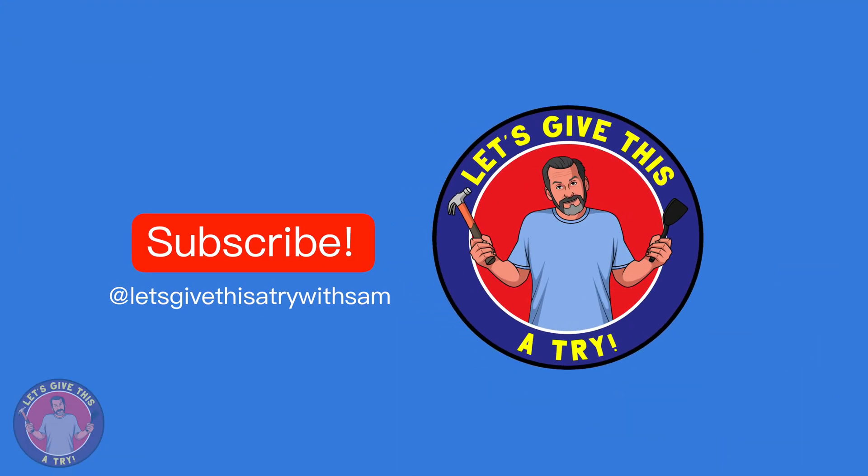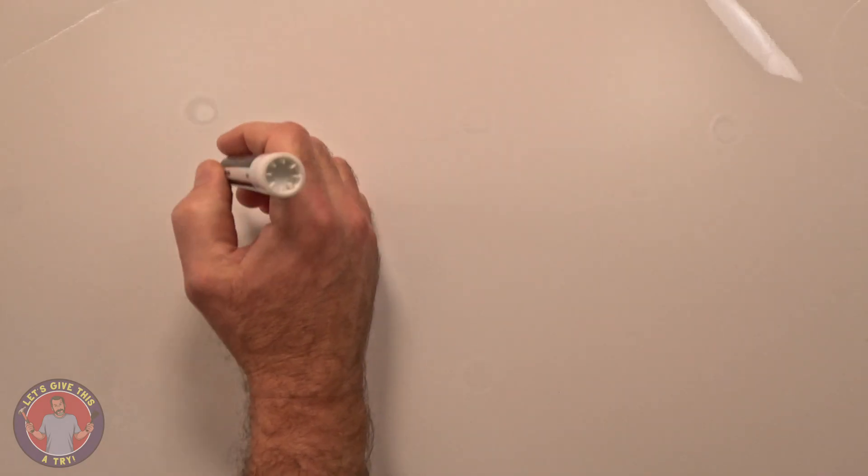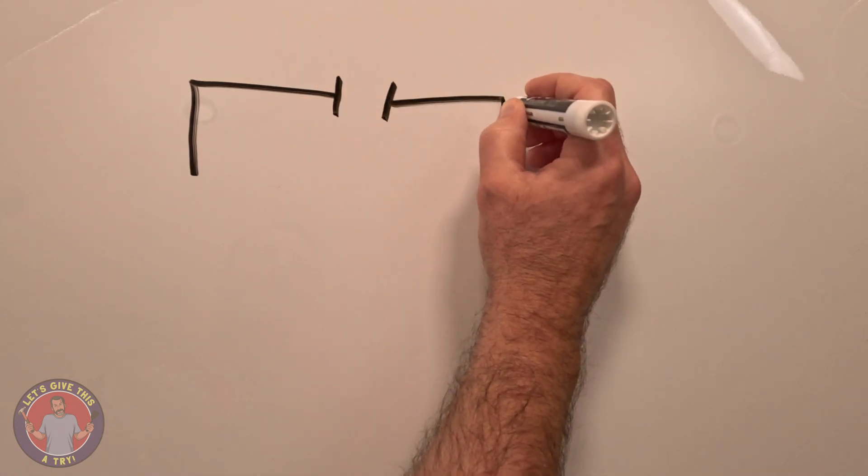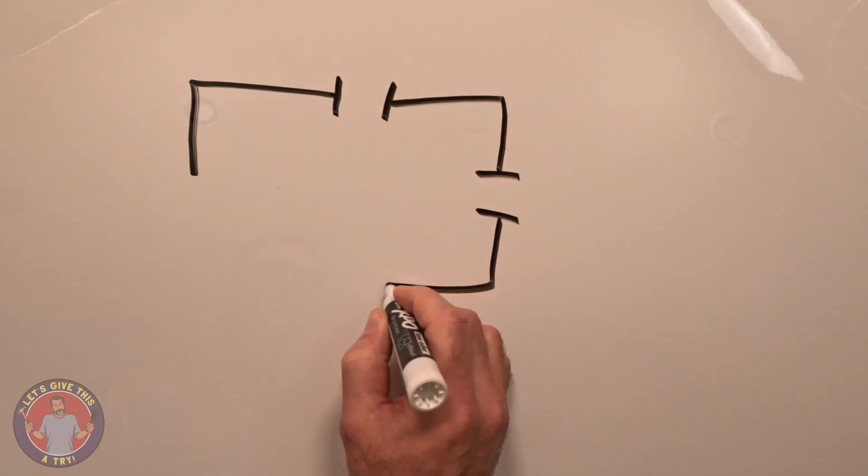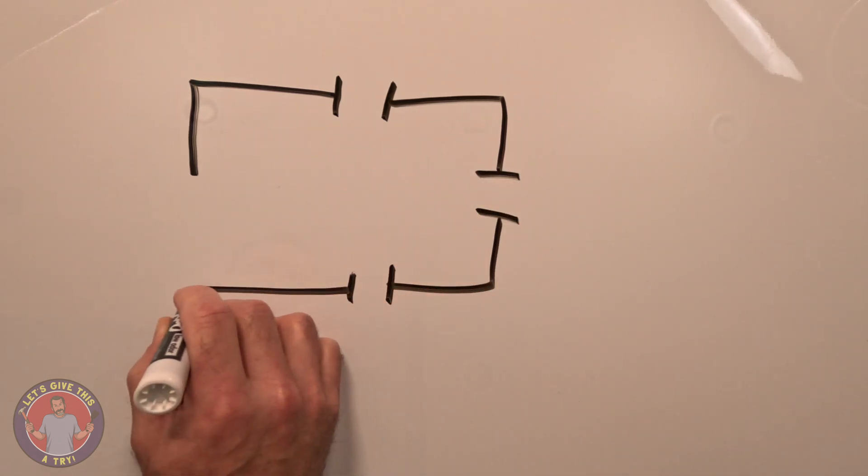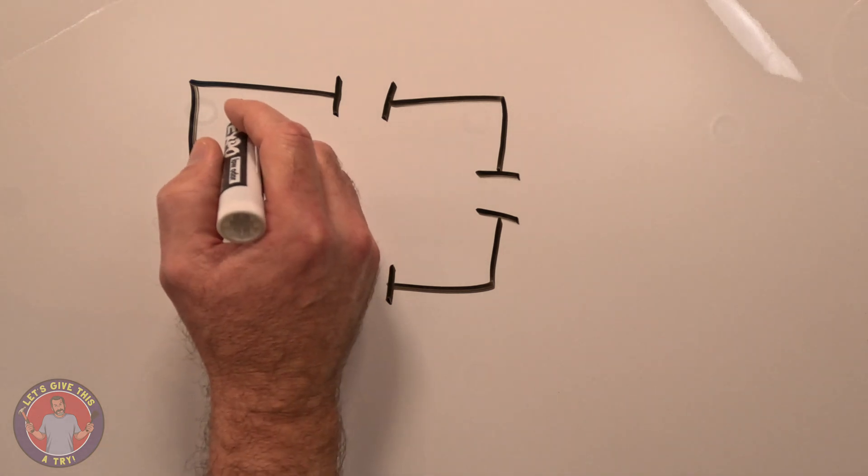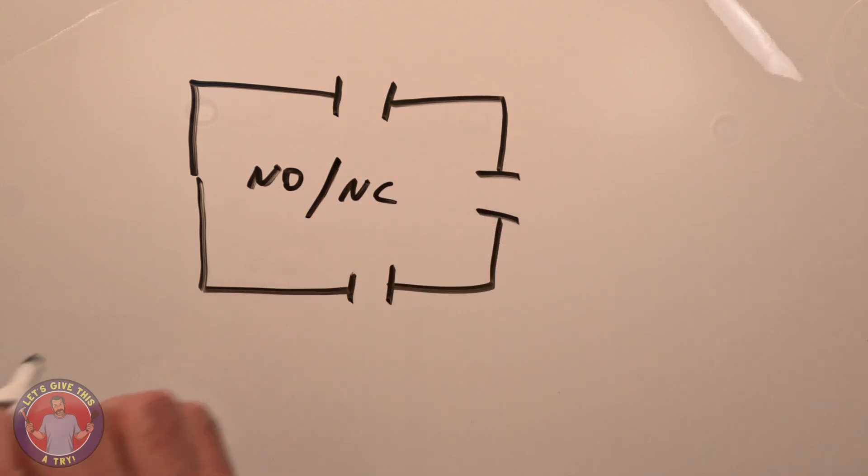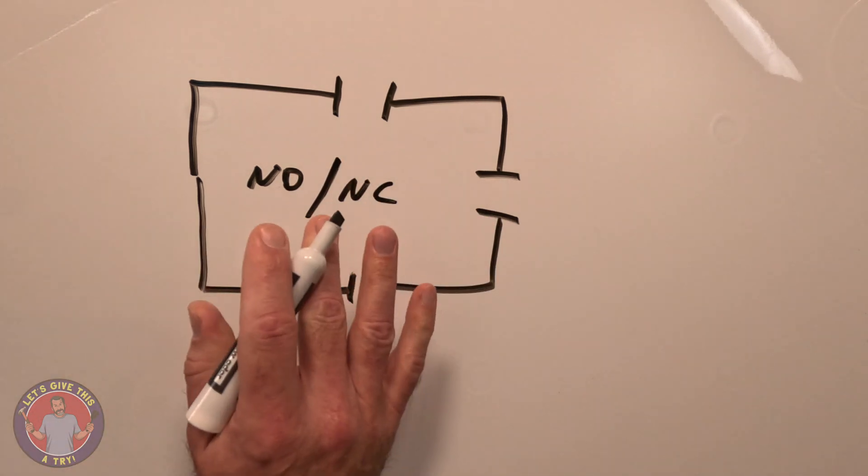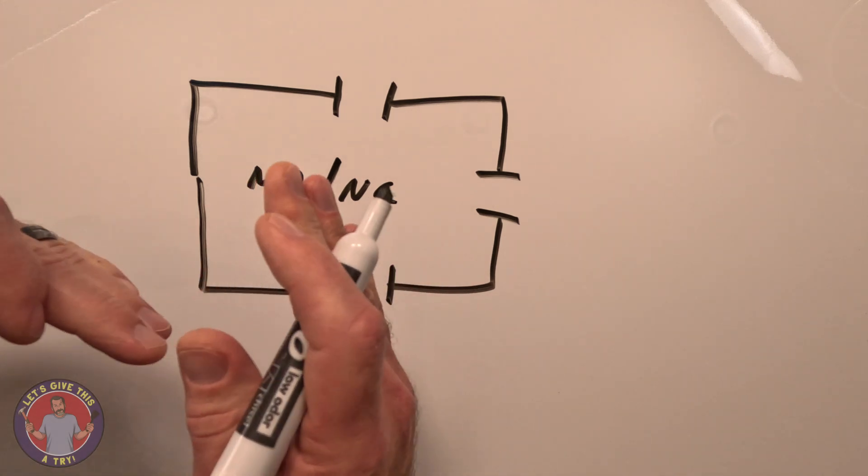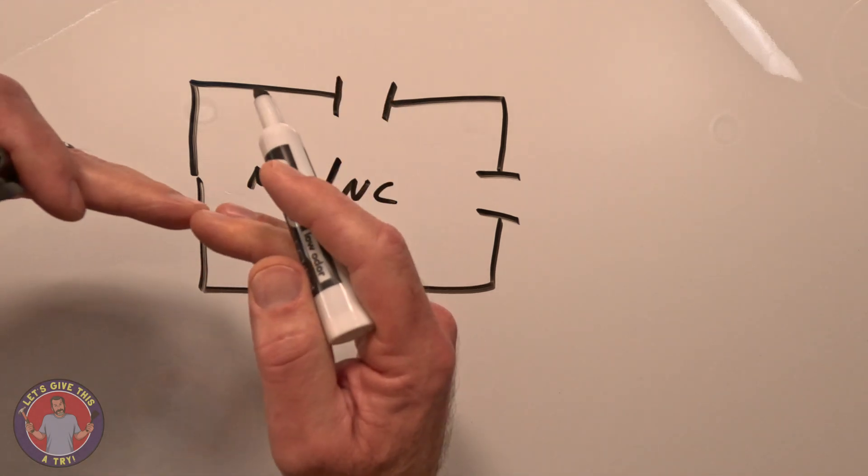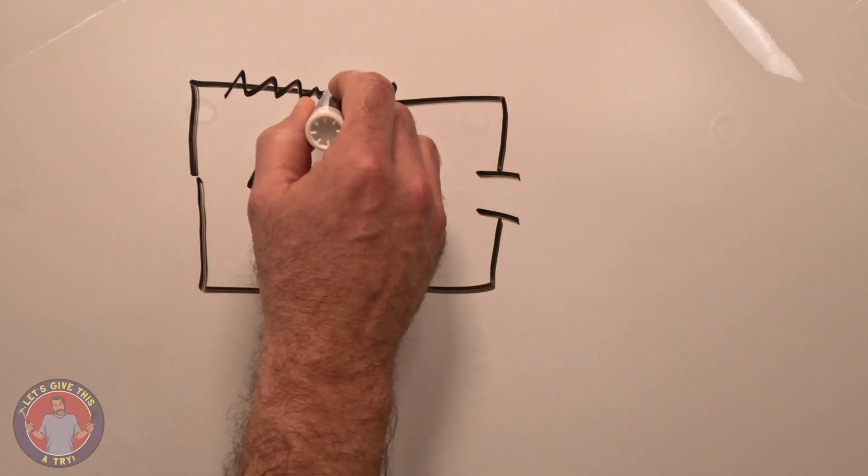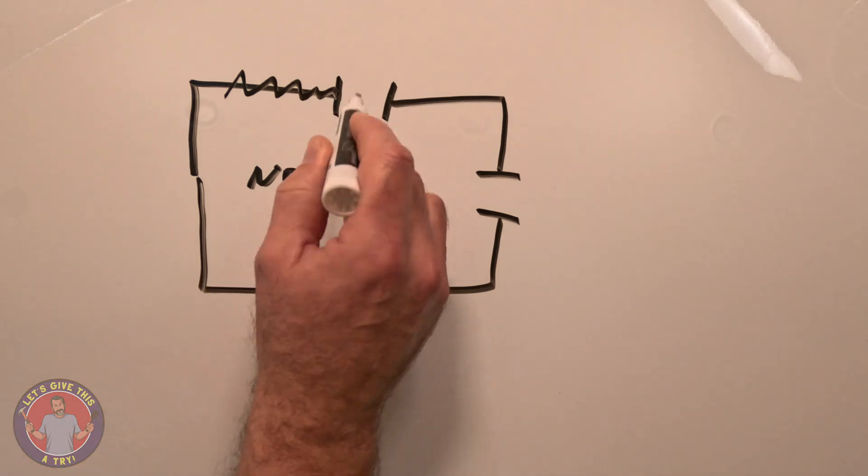To understand the basics of this switch and how it works, switches are either normally open or normally closed, which means in their resting state they have either an open circuit or a closed circuit. If it's an open circuit and electricity is trying to come along, it can't get through because it's open. If it's closed, then electricity can continue on.